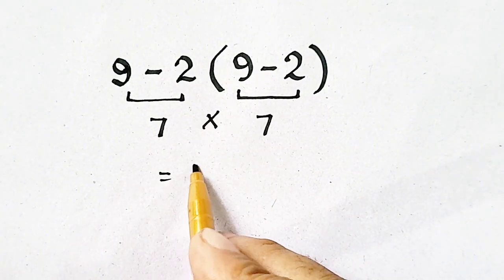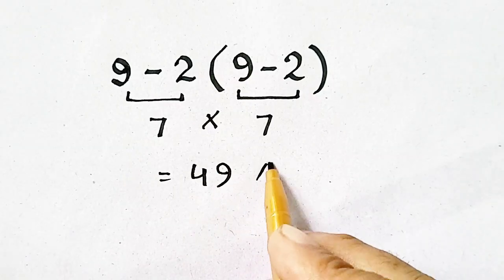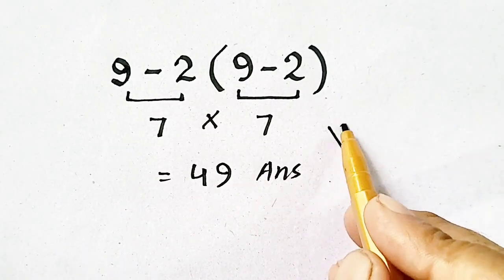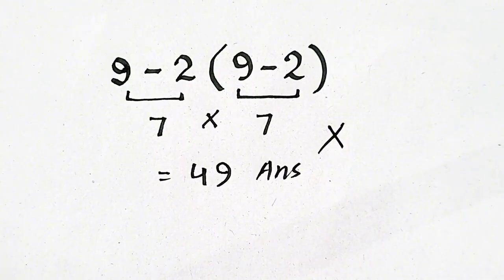7 times 7 will be equal to 49, which will be our answer, but remember that this answer is incorrect.